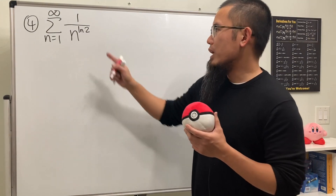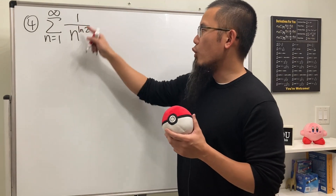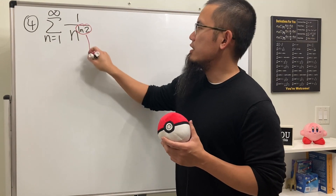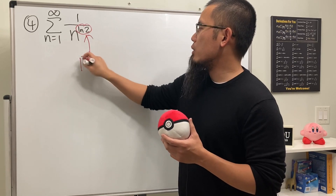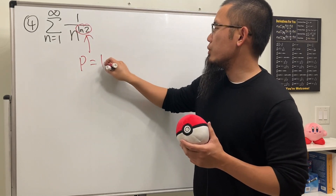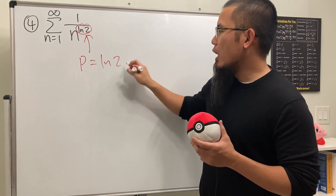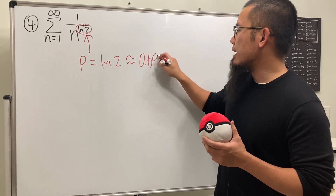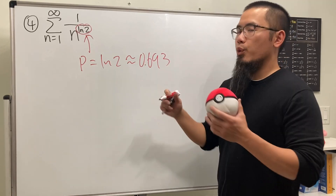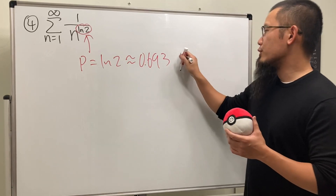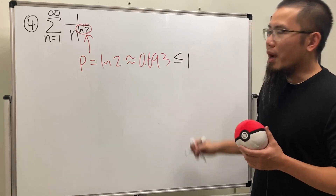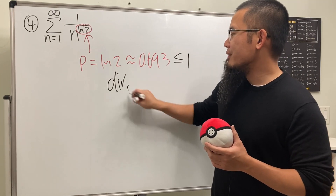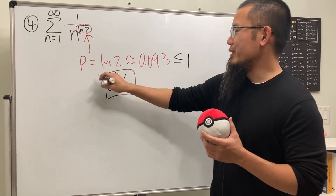For number four, we have the series of one over n to the ln(2) power. That p value is ln(2), which is approximately 0.693. Since this is less than or equal to one, this series diverges.